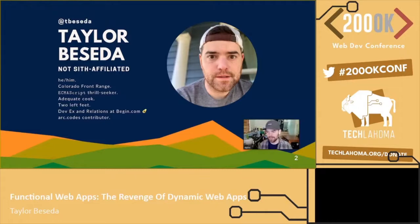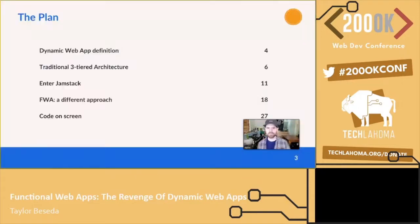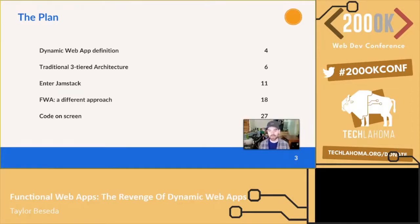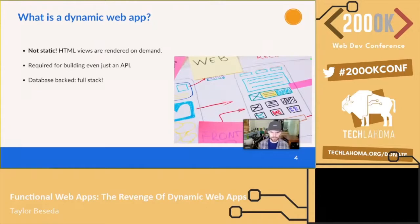So the plan for today's presentation: I want to start off by talking about what a dynamic web app is, then go over a couple of architectural patterns that have emerged — the older traditional three-tier and newer things like the JAMstack. Then I want to get to our ideas of what a functional web app is and how it differs. Finally I'm going to get to some code on the screen — I'm not going to live code, I'll have code in the slides.